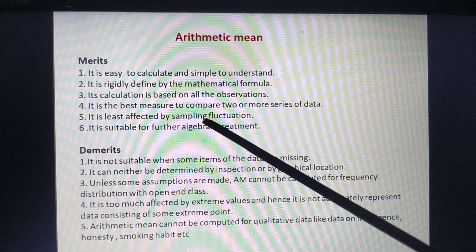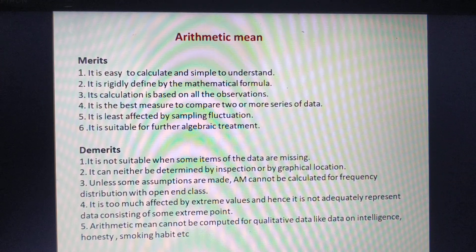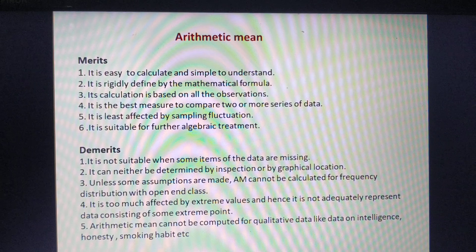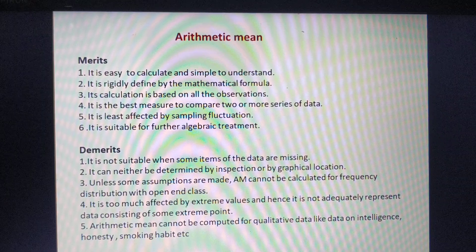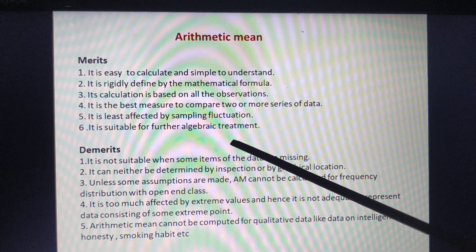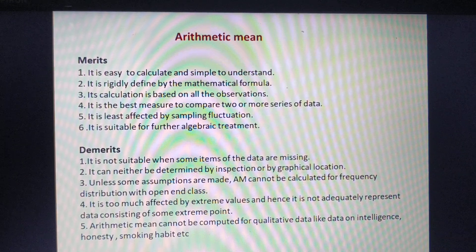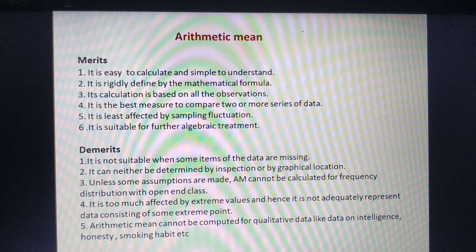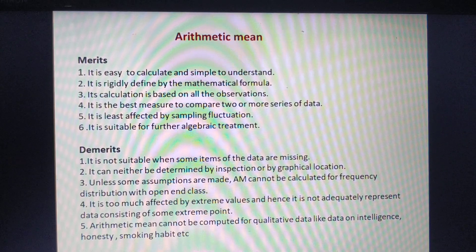The fifth merit is that it is least affected by sampling fluctuation. If we take different samples of, say, five observations from a hundred, the mean of those different samples does not fluctuate much. The sixth merit is that it is suitable for further algebraic treatment — for example, arithmetic mean is used in calculating standard deviation.